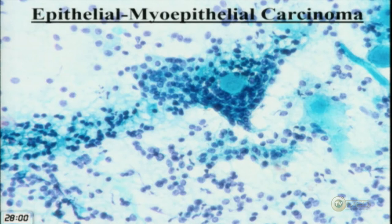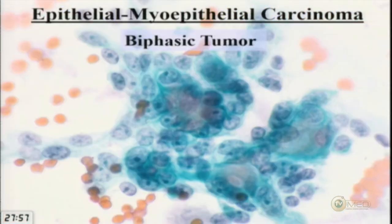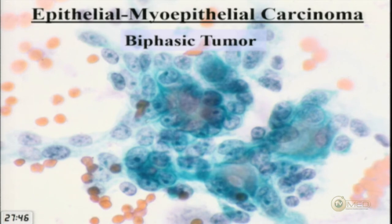On cytology, the key finding suggesting epitheliomyoepithelial carcinoma is the biphasic pattern — dominated by myoepithelial cells with abundant clear cytoplasm rich in PAS-positive glycogen, and a smaller population of cohesive ductal cells. Those laminated proteinaceous secretions are also a diagnostic clue. In some cases the tumor consists almost entirely of clear myoepithelial cells, making FNA more challenging.